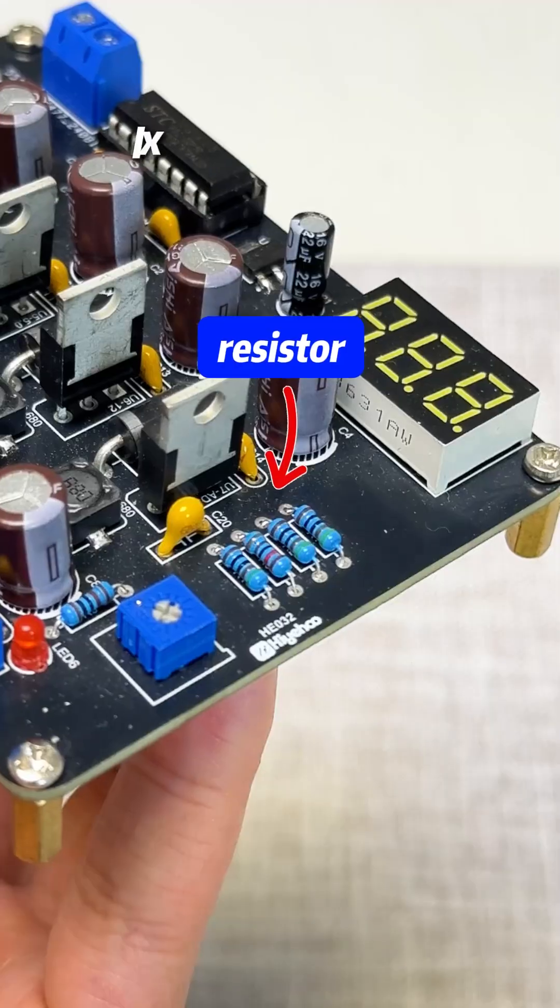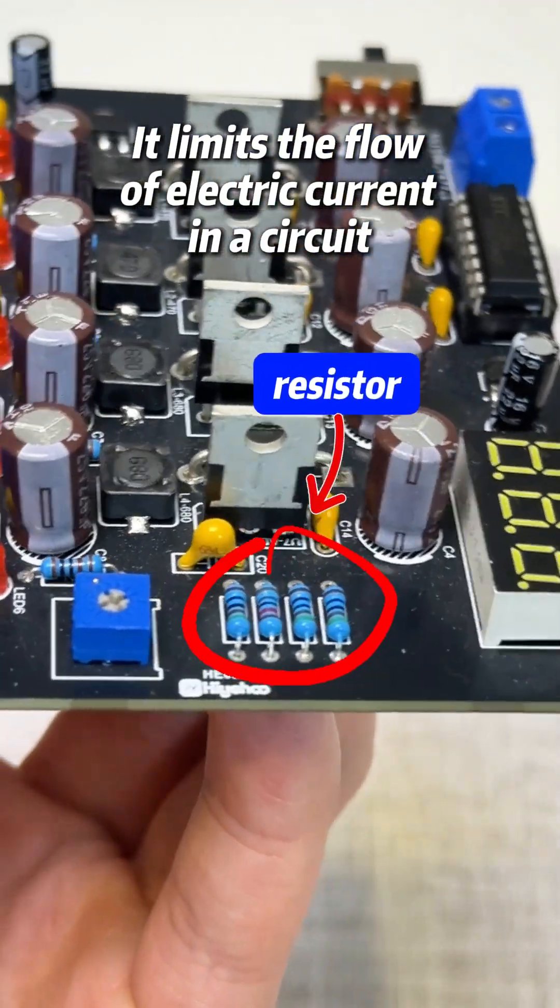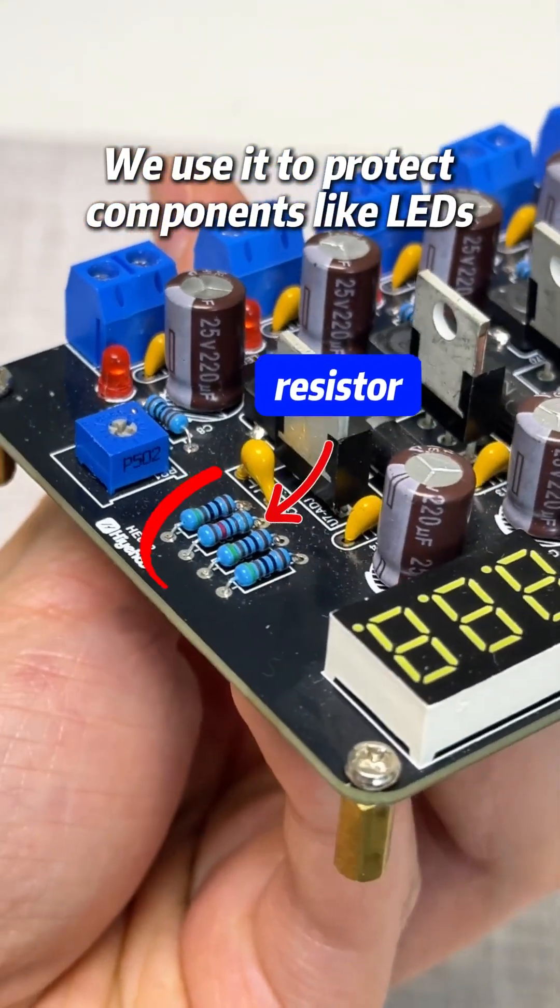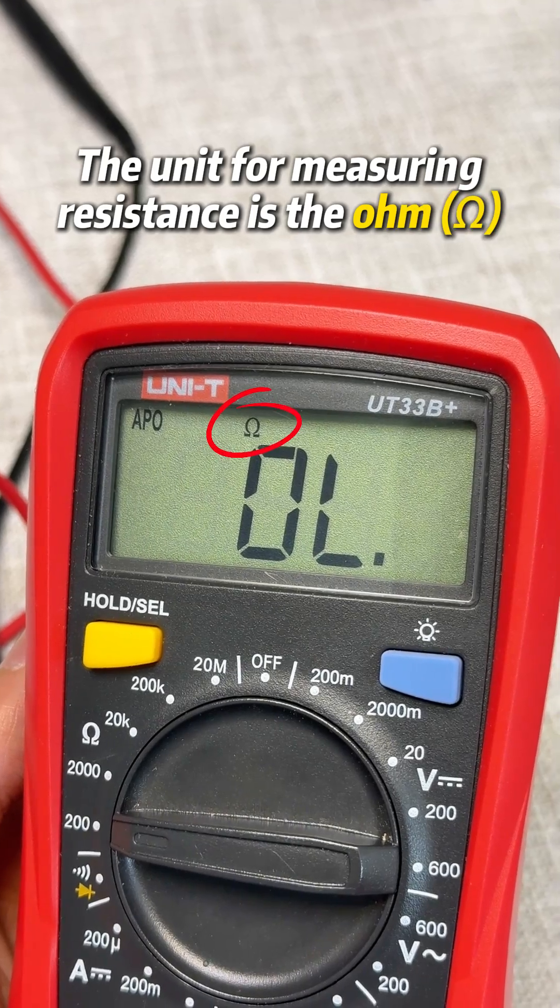This is a resistor. It limits the flow of electric current in a circuit. We use it to protect components like LEDs. The unit for measuring resistance is the ohm.